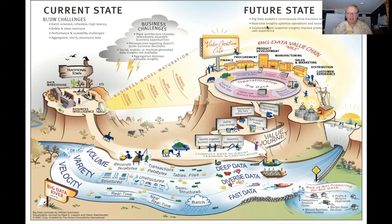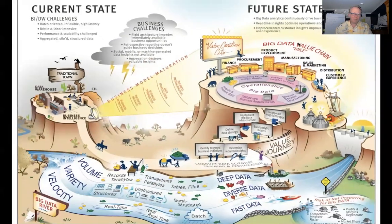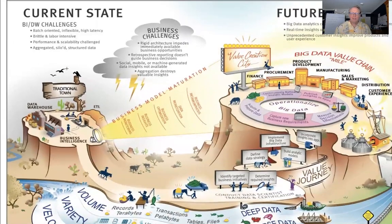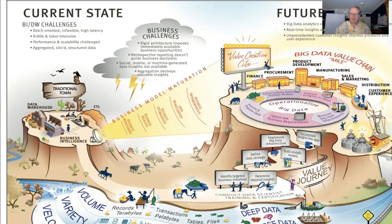What I find very interesting and comforting about this big data story map is that many of the ideas I talked about seven-plus years ago are actually still relevant today. Let's start in the upper left-hand corner and talk about the challenges that traditional organizations faced — those focused on BI and data warehousing. The problem is that BI and data warehousing are very batch-oriented, very labor-intensive to build, and performance and scalability were very challenging.